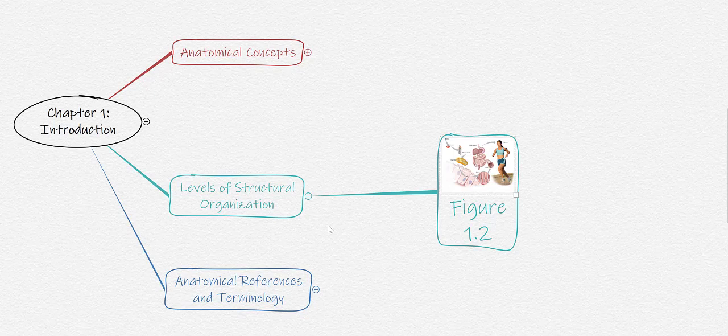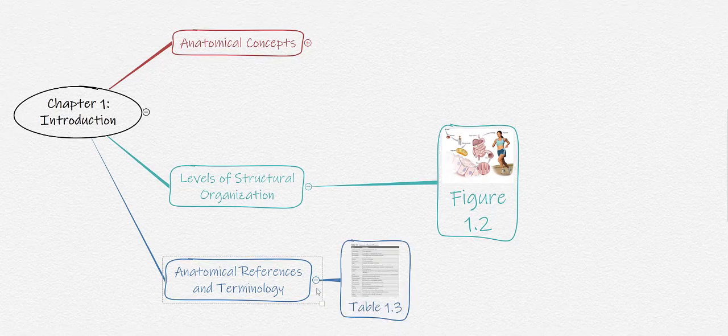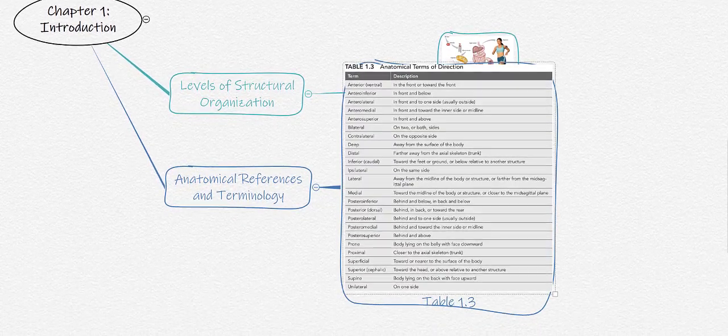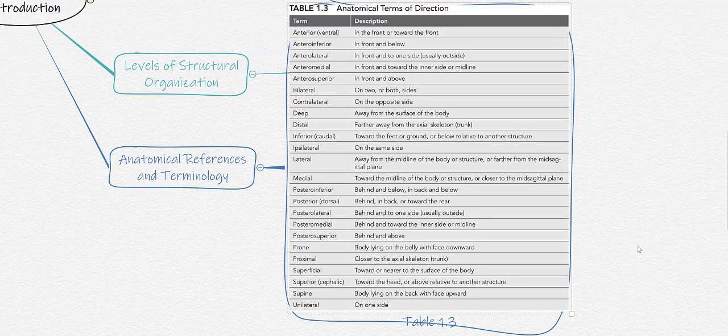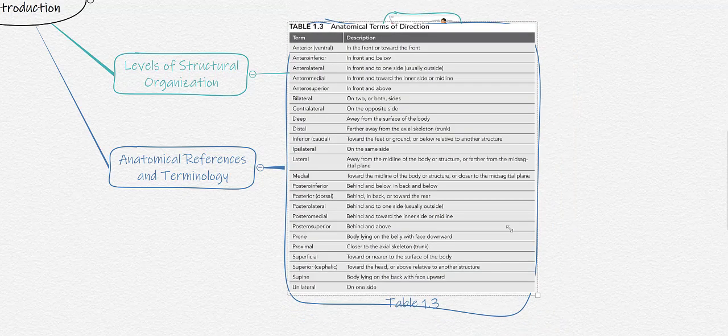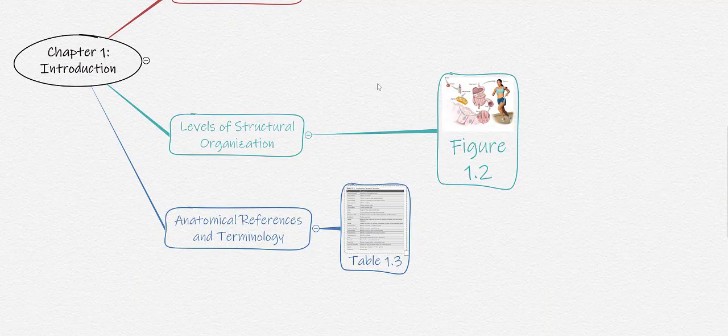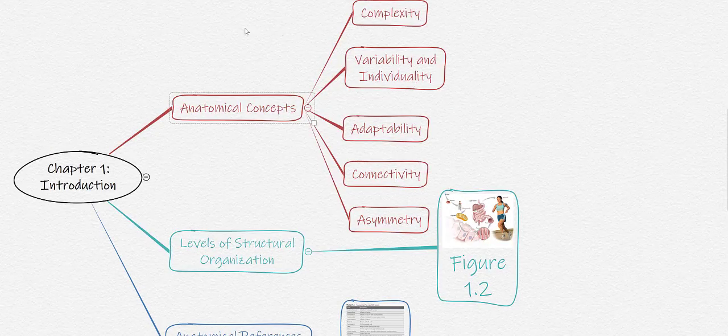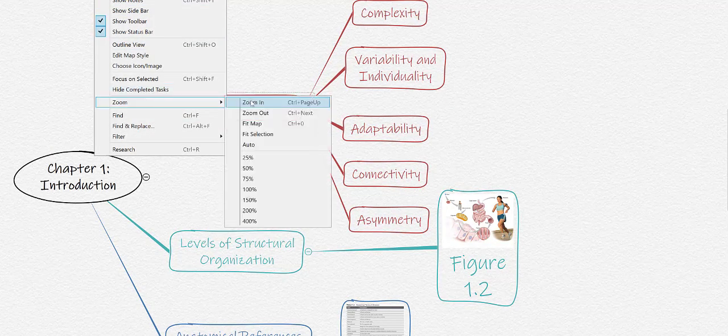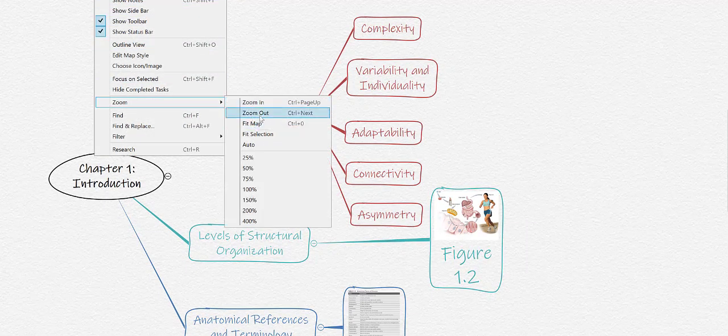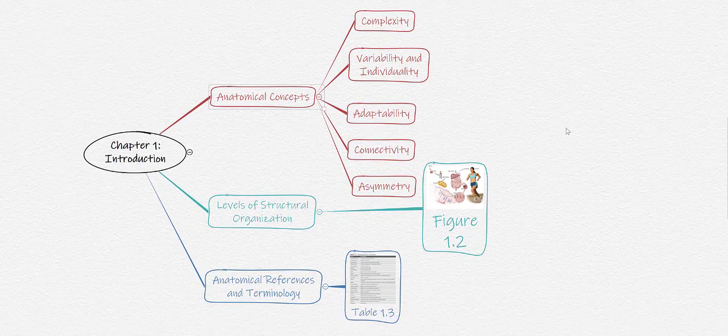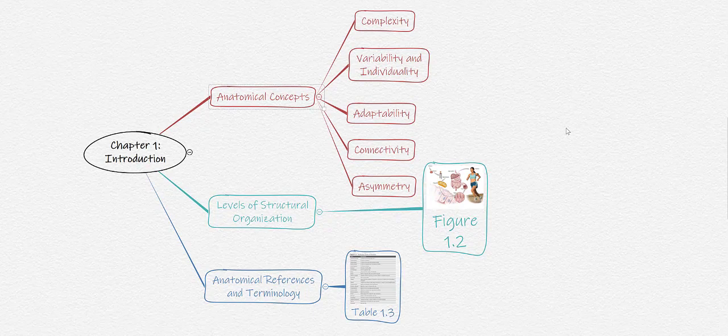Now for anatomical references and terminologies, I hope that's something that you remember from your bio class. Table 1.3 presents a nice refresher if you need it. Let's just blow this up and take a better look at it. You can see in Table 1.3 that he includes a list of all the terms and their anatomical descriptors. So now if we blow out the whole concept map here, we have a nice schematic of the overview of the introduction.